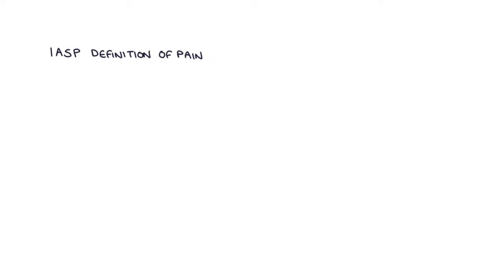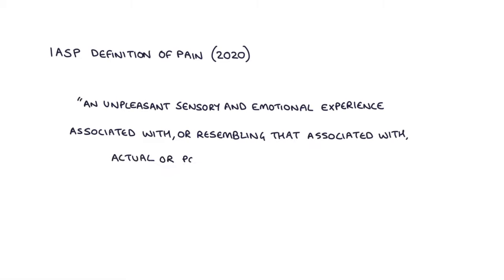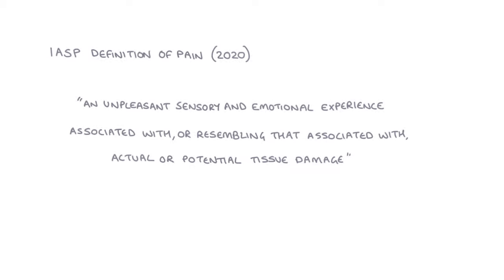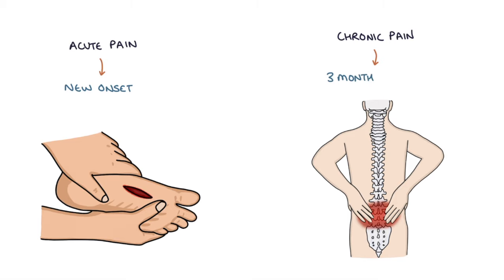The International Association for the Study of Pain, or IASP, publishes a definition of pain, and this is from 2020. Their definition of pain is an unpleasant sensory and emotional experience associated with or resembling that associated with actual or potential tissue damage. It's important to distinguish between two categories of pain: acute pain, which is a new onset of pain, and chronic pain, where the pain has been present for three months or more.